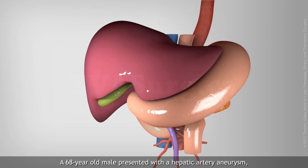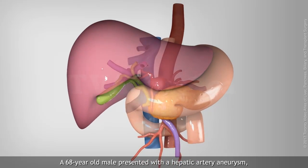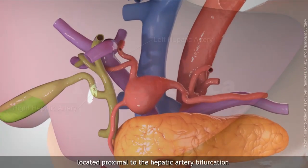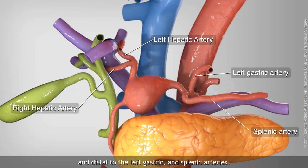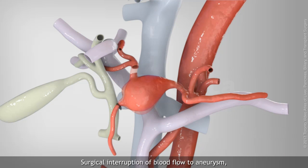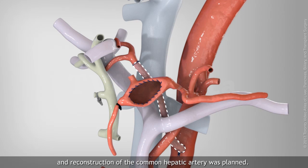A 68-year-old male presented with a hepatic artery aneurysm, located proximal to the hepatic artery bifurcation and distal to the left gastric and splenic arteries. Surgical interruption of blood flow to the aneurysm, resection of the thrombus, and reconstruction of the common hepatic artery was planned.